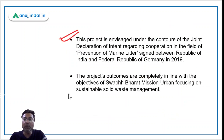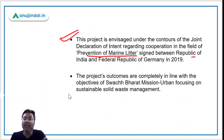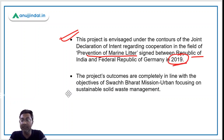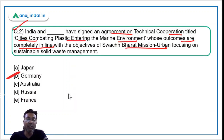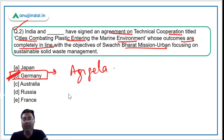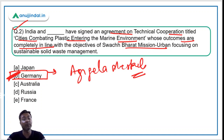This project is part of regional cooperation between India and Germany in the field of prevention of marine litter, signed between the two countries in 2019, and is in line with the objectives of Swachh Bharat Mission Urban. The correct answer is option B — Germany. Germany's Chancellor is Angela Merkel, who was the first woman to become Chancellor of Germany.